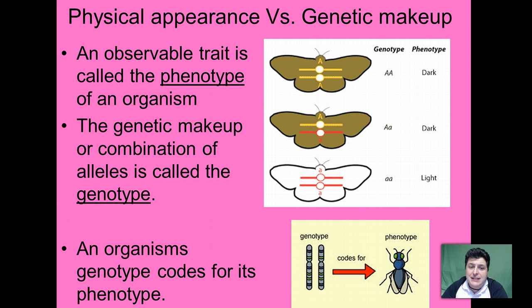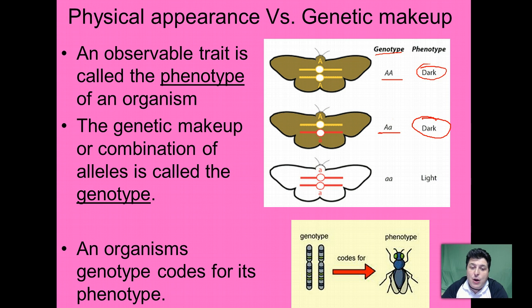Looking at this example with these moths, there are two different phenotypes: dark moths and light moths. If you get two dominant genes, your genotype is going to give you the dark phenotype because dark is dominant over light. If you get one dominant and one recessive, you're still going to have the dark phenotype. The only way to show the light phenotype is if you get only recessive alleles. So it's the genes — the alleles carried on the chromosomes — which are determining our physical appearance.